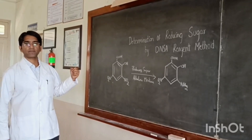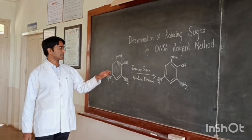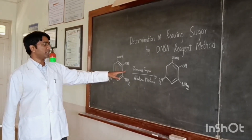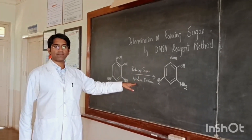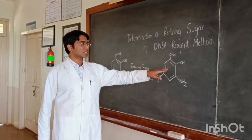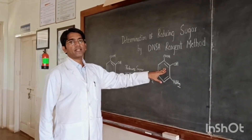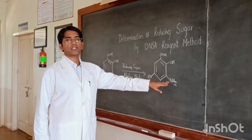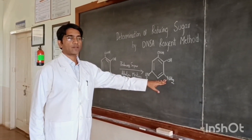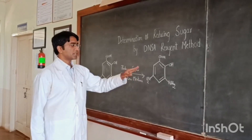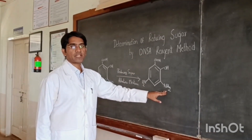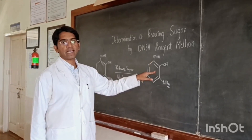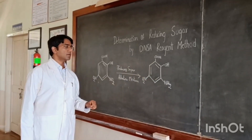This particular reaction follows the following principle. As you could see here, this is 3,5-dinitrosalicylic acid which, in the presence of reducing sugar and alkaline medium like copper sulphate, undergoes a reaction whereby it gives a compound where the third position undergoes reduction of the nitro group to an amine group. So there is a formation of 3-amino-5-nitrosalicylic acid.